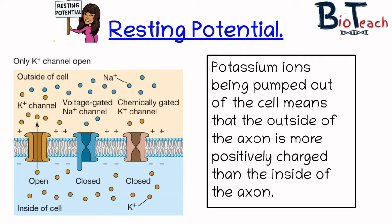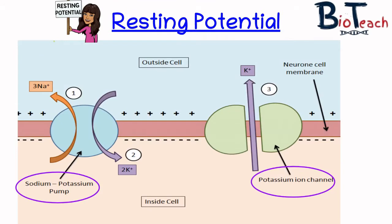Resting potential is when an axon is not being stimulated by an action potential. The resting potential is usually around minus 70 millivolts. When the axon is resting, it is said to be polarised. The resting potential of a neuron is maintained by two proteins found in the cell membrane: the sodium-potassium pump and the potassium ion channel.